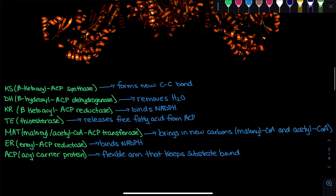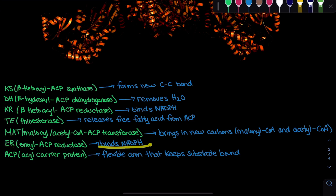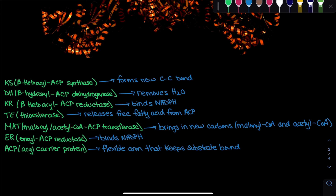Next we have the KR domain — the beta-ketoacyl ACP reductase — which binds NADPH. We also have another reductase called the enol ACP reductase, or ER, which also binds NADPH. The ER domain is used in the final step of fatty acid synthesis, going from enol ACP to fatty acyl ACP, with the help of NADPH.